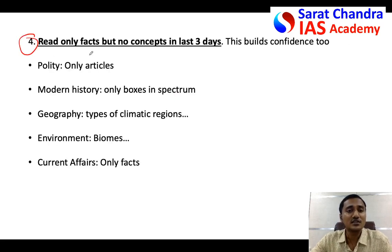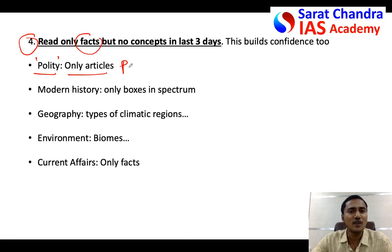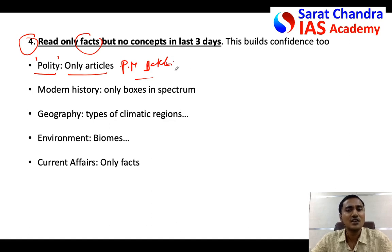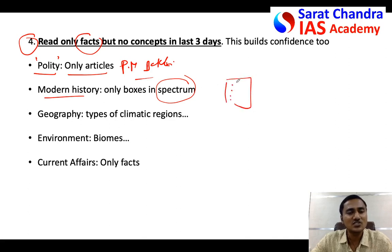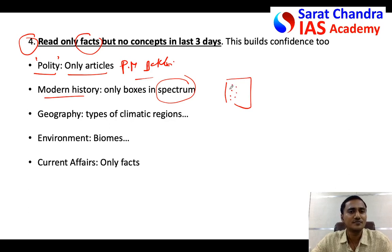Finally, the most important thing: revise only the facts. For example, when it comes to polity, read only the articles. If you have P.M. Bakshi's book, the first four pages only have articles. Laxmikanth has also given all important articles. Otherwise, just download the important articles of the Constitution of India — go to the articles, no need to go through the explanation, just the articles. For modern history, if you have Spectrum, at the end of almost every chapter they have given a box of important points — just go through those points. For ancient and medieval history, if you have a source that sums everything up in a few points or PPTs, go through only the factual parts.